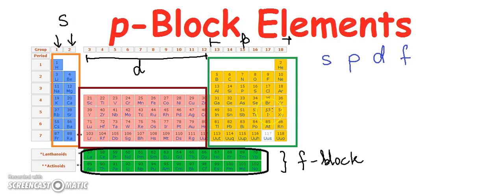So, in the long form of the periodic table, the elements have been classified into 4 blocks S, P, D and F depending upon the sub shell in which the last electron enters.